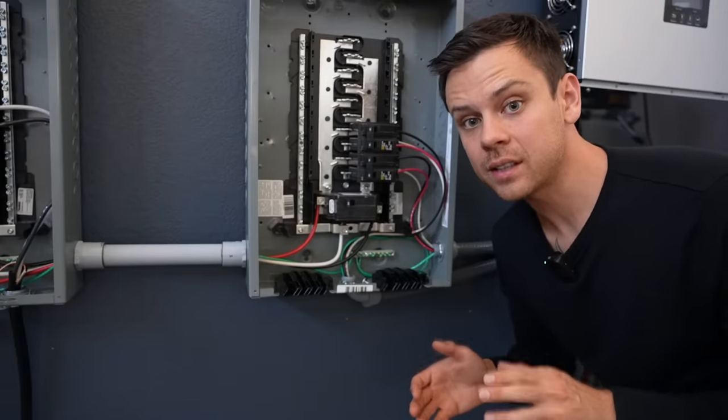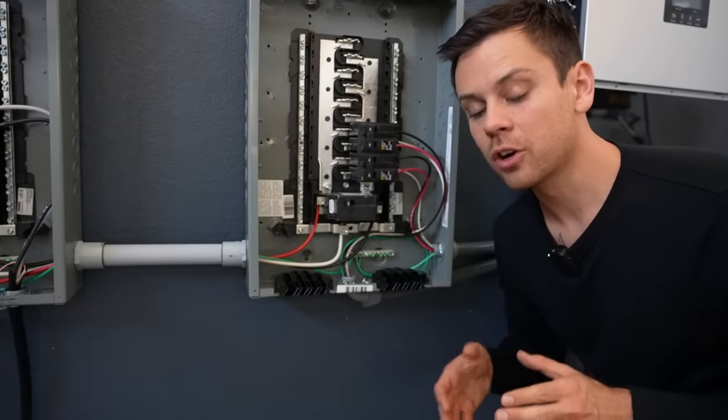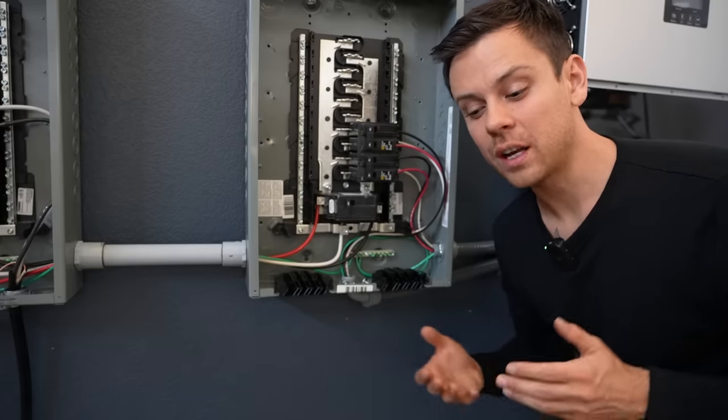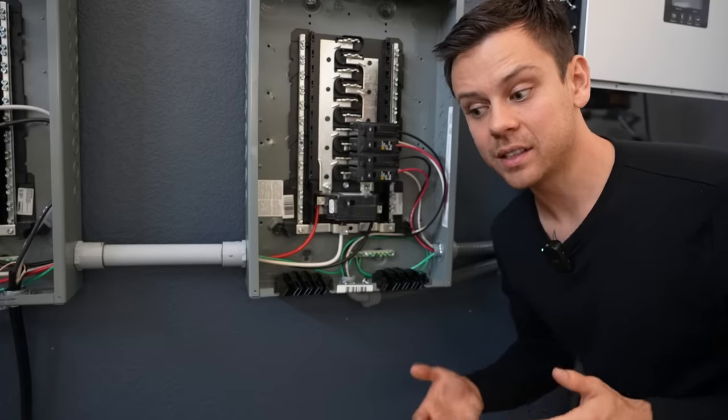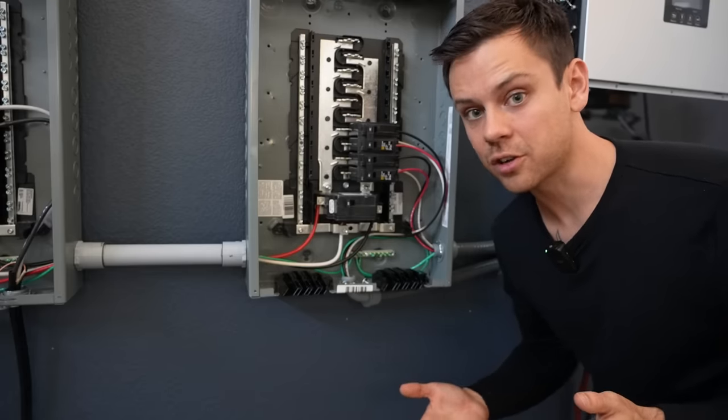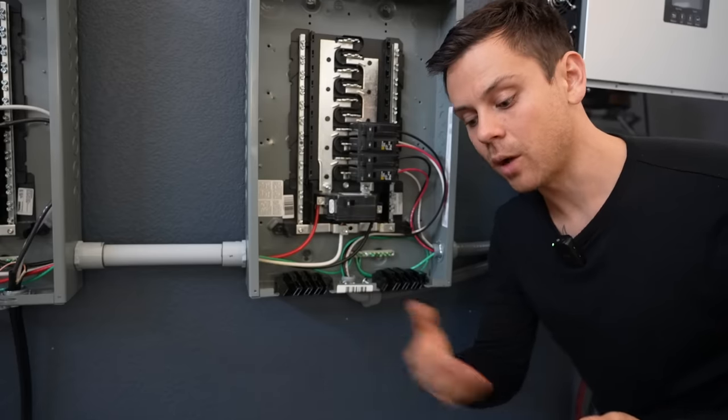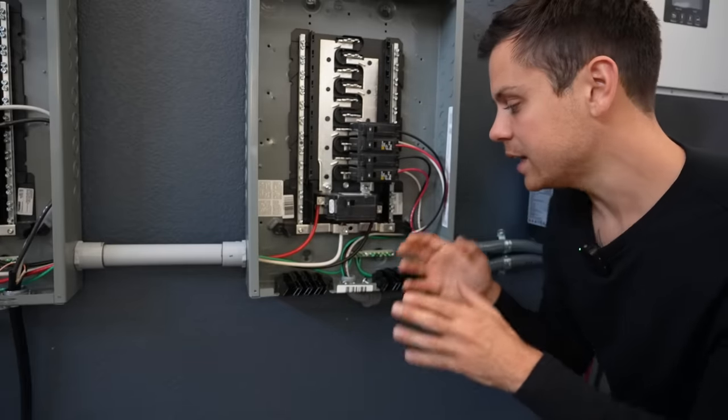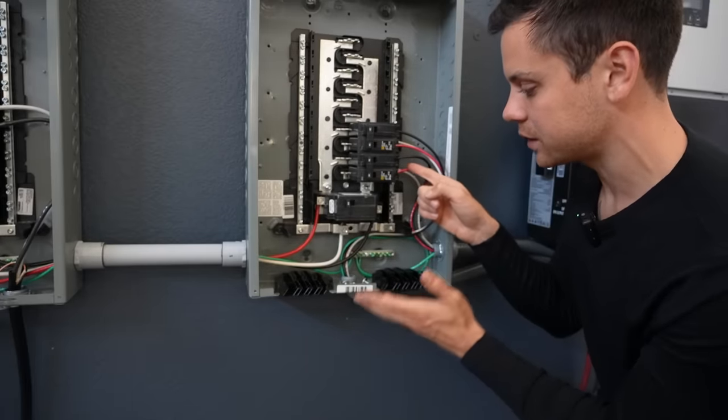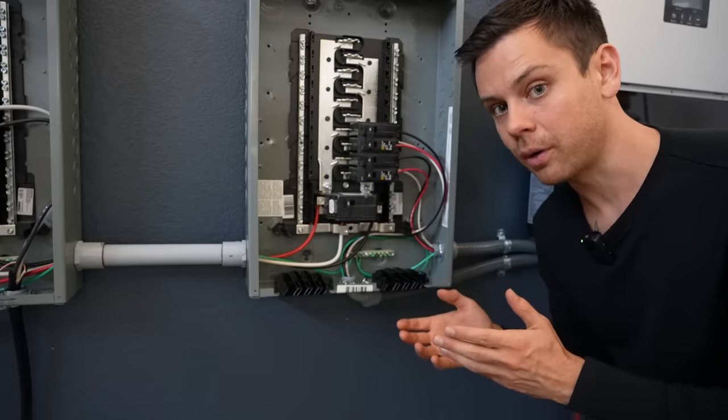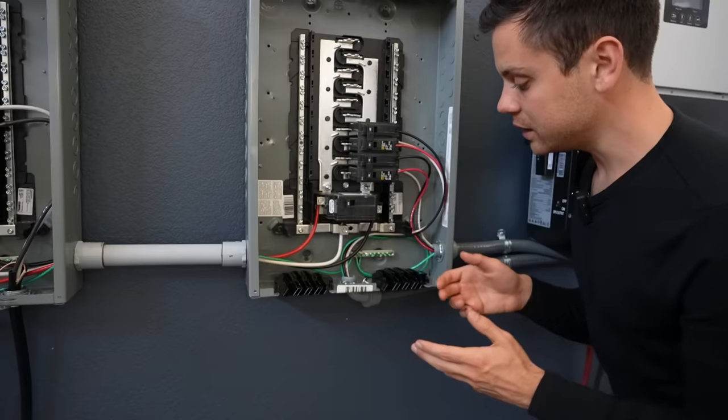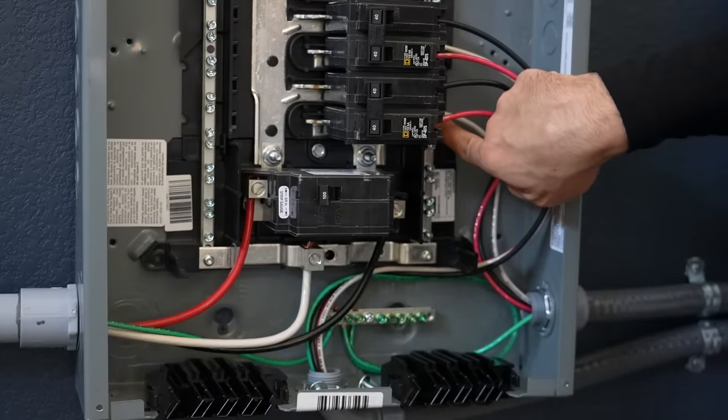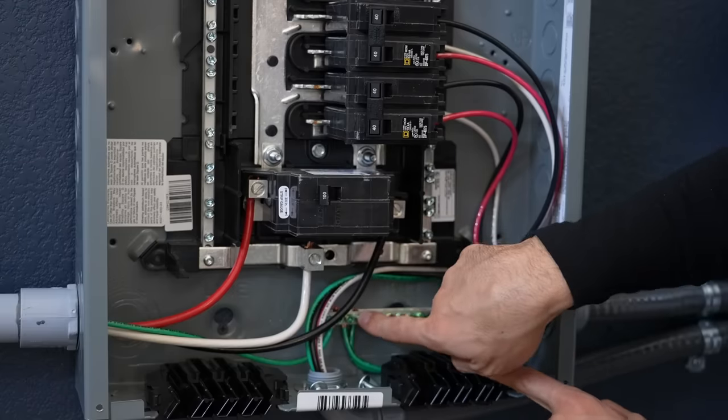Now the neutrals and the grounds need to be separated with this system. These inverters have their own ground neutral bond relay. And what that means is that depending on the situation it will create a bond where it's necessary. But if it doesn't need it, in the case of a pass-through, that's a feature that these have. If you're connected to the grid and it wants to power the loads and there's no more battery power or solar power, it will pass through the power from the grid. In that situation you want to keep the neutrals and the ground separate. So you have to install your own ground bus bar for the ground conductors.